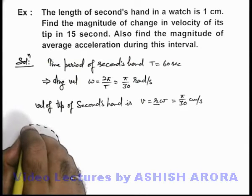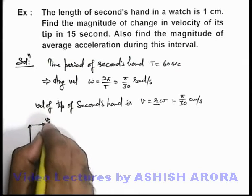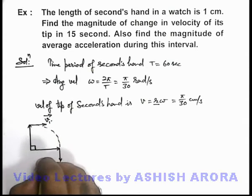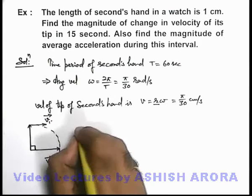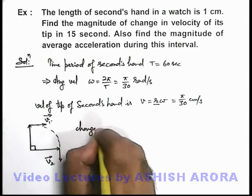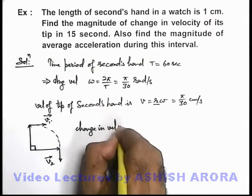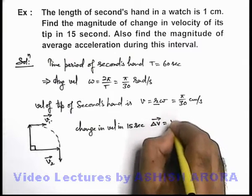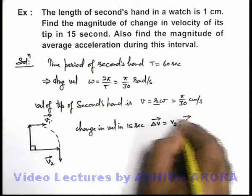So initially the velocity vector of the tip would be in this direction, say that is v1. Finally it is in this direction, say it is v2. So if we find out the change in velocity in 15 seconds, this delta v can be written as v2 minus v1 vector.